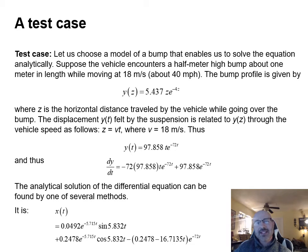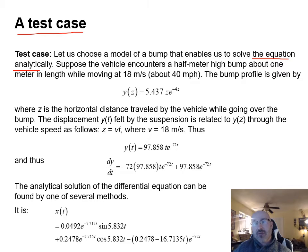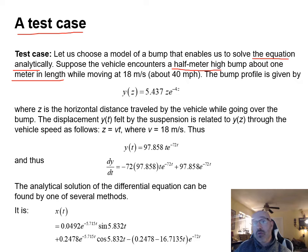Now let's look at a test case. The car goes over a bump that is half a meter high and approximately one meter in length. The vehicle speed is about 40 miles per hour, which converts to 18 meters per second.